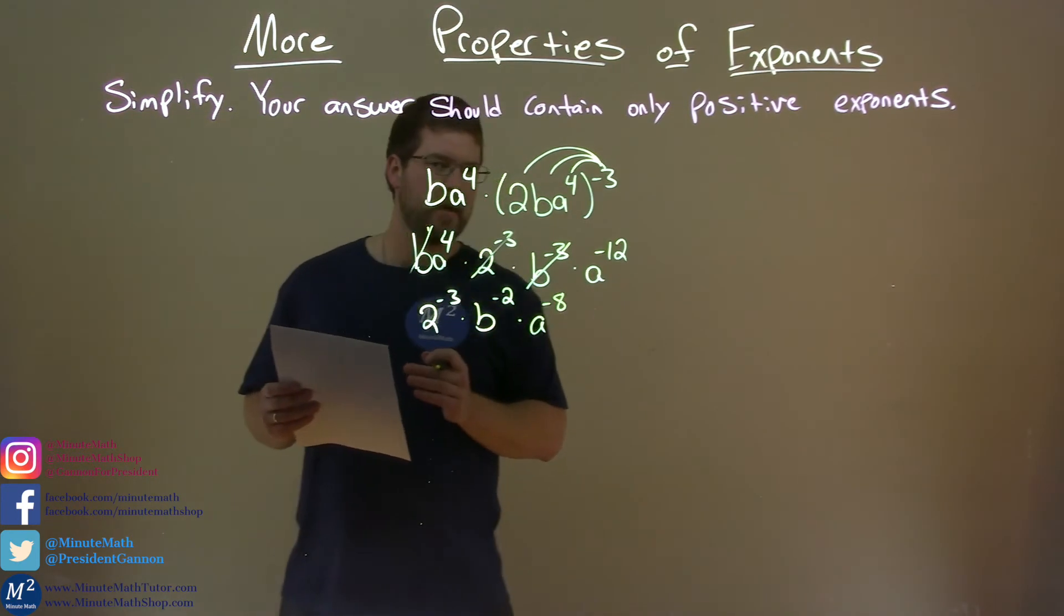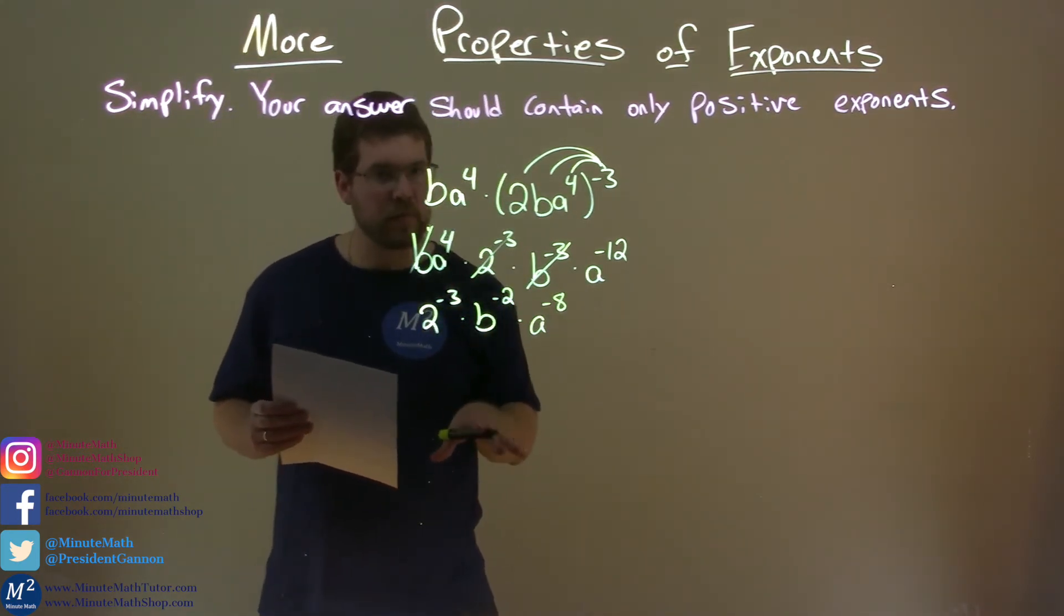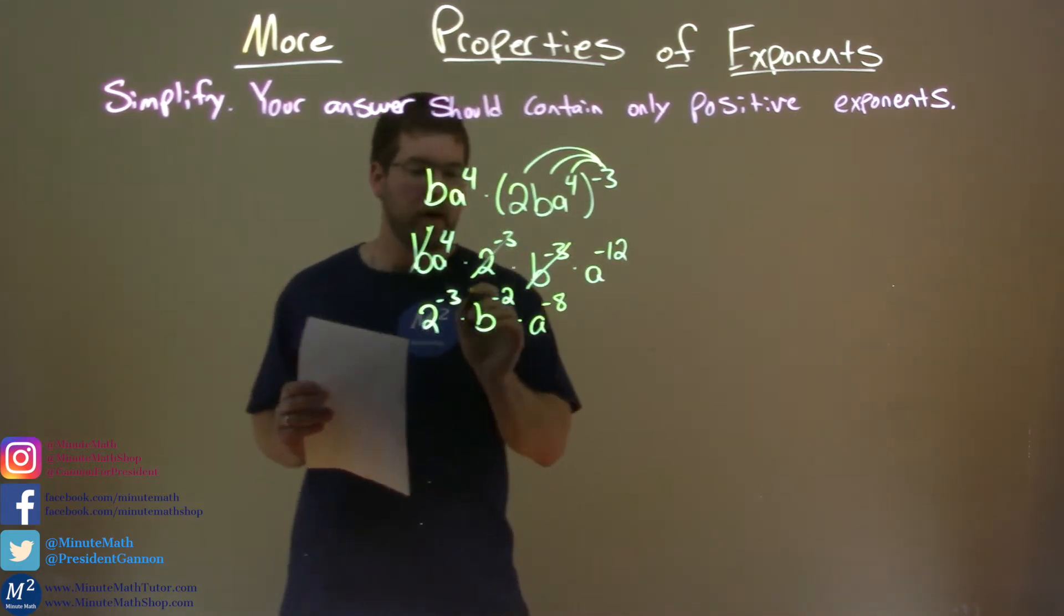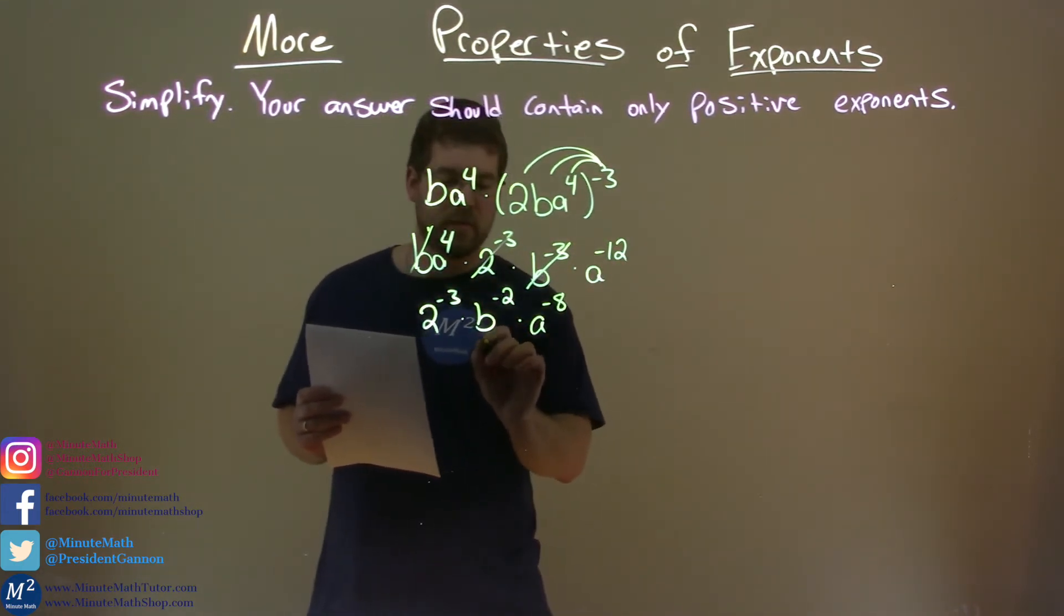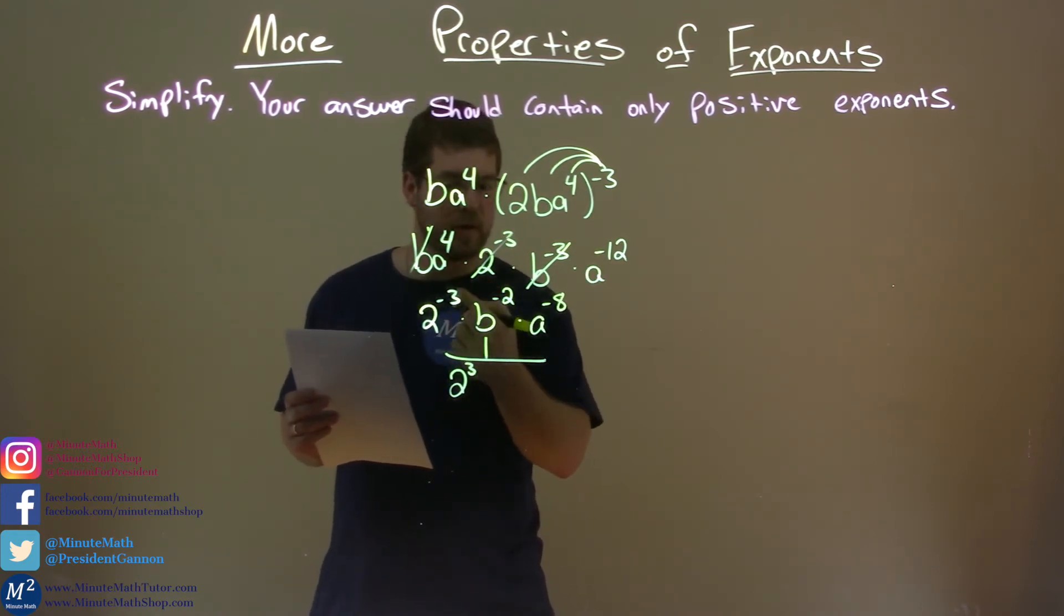Why are we not done yet? Well, we have to bring everything down to the denominator. Can't have any positive exponents. Luckily, this is now very easy to do. All these values can come down with a positive exponent. Negative in the numerator makes it a positive in the denominator.